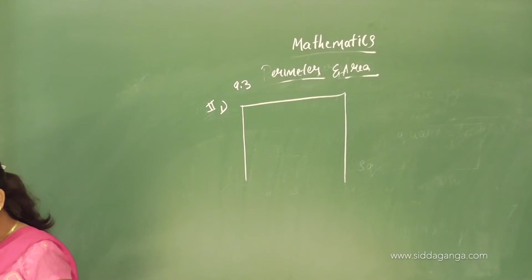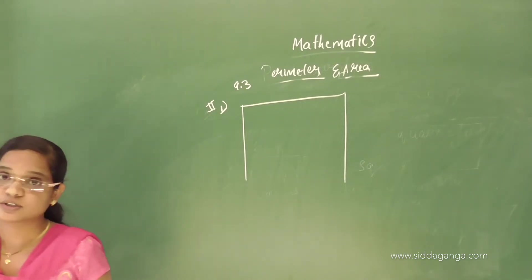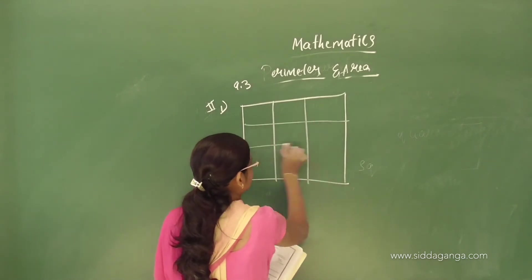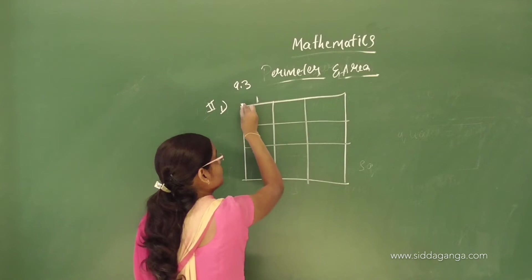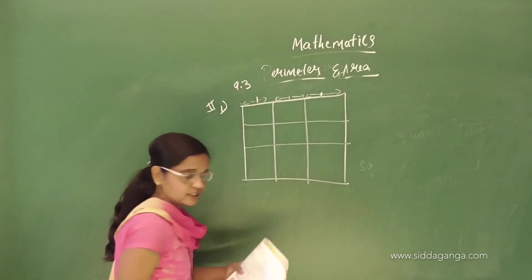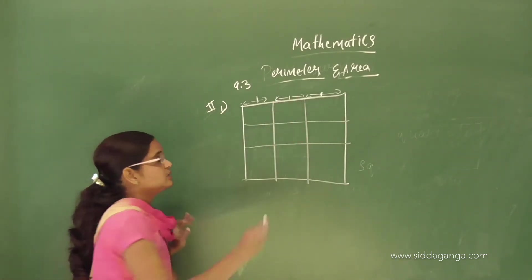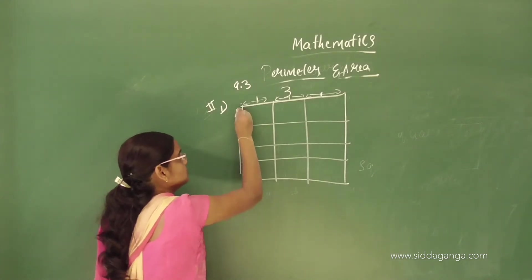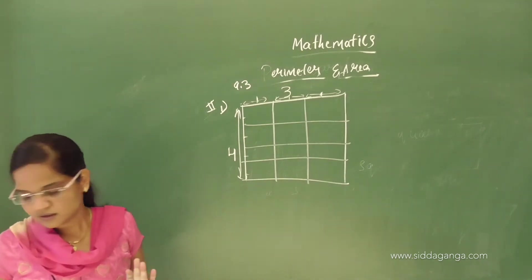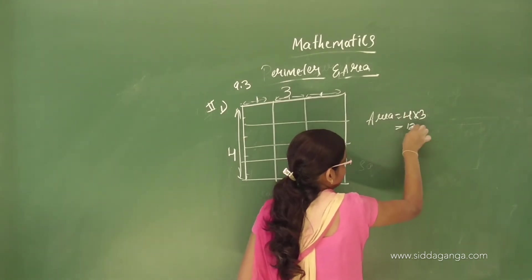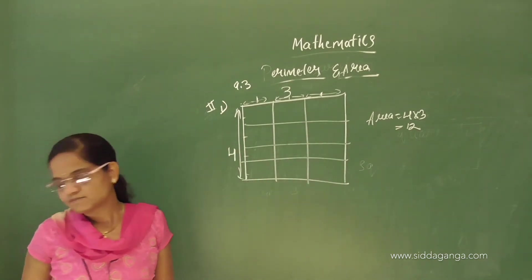Unit length is nothing but 1 metre or 1 centimetre — it might be anything. Here, one small square equals one unit. Counting the squares: the rectangle is 4 by 3. Area is equal to 4 into 3, which is 12. The unit is centimetre square — so the answer is 12 cm².